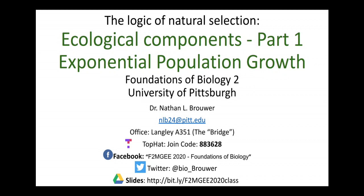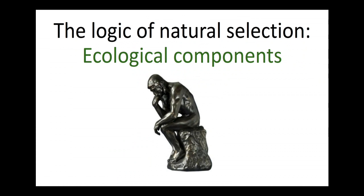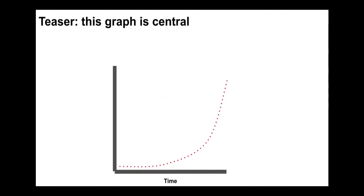In this video I'm going to further talk about the logic of natural selection, in particular the ecological components of exponential population growth. We're focusing on the ecological components, the evidence, and the logic that Darwin applied in order to come up with the process of natural selection. As a teaser, this graph is going to be very central and essential to the ecological aspects of natural selection — see if you understand it by the end.